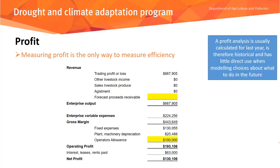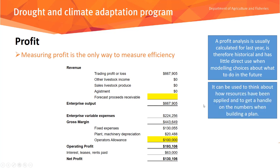A profit analysis is usually calculated for last year, so it is historical and has limited direct use when modelling choices about the future. You can analyse last year's profit, but it doesn't tell you much about where to go from here. It gives you some data and can help think about how resources have been applied, and it can help when building a plan — some costs like operators allowance and variable expenses are useful inputs.